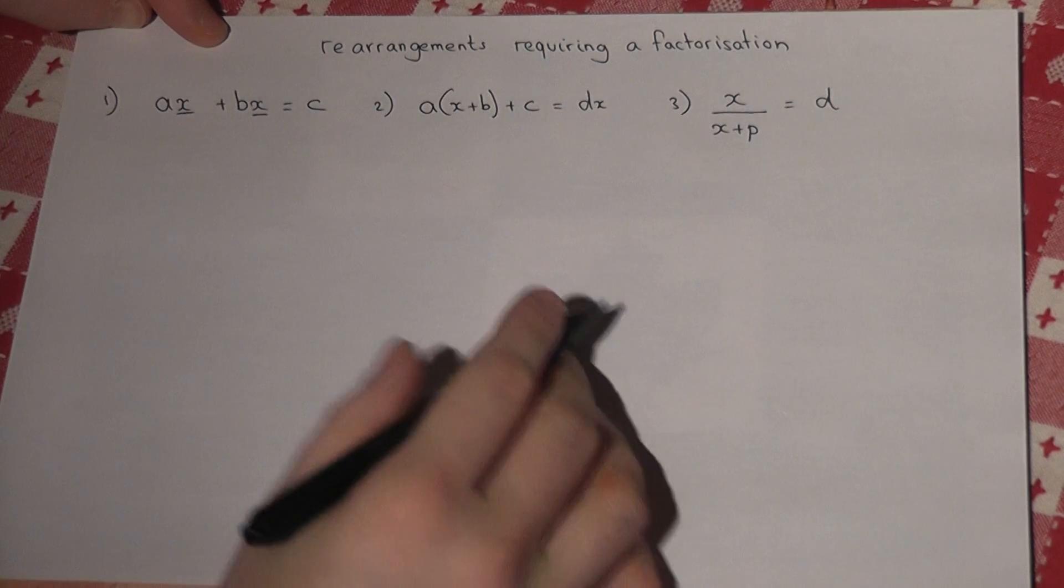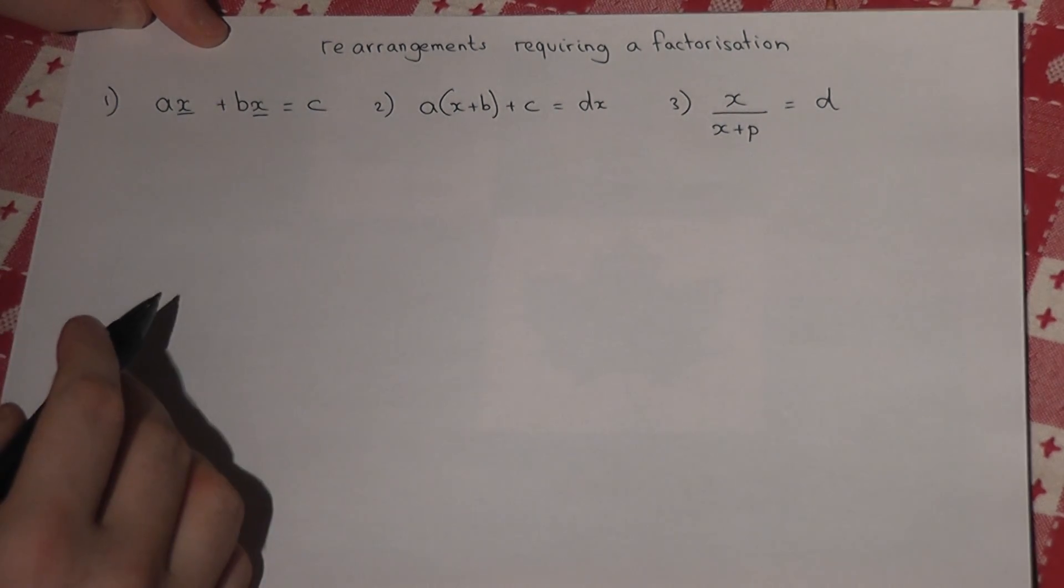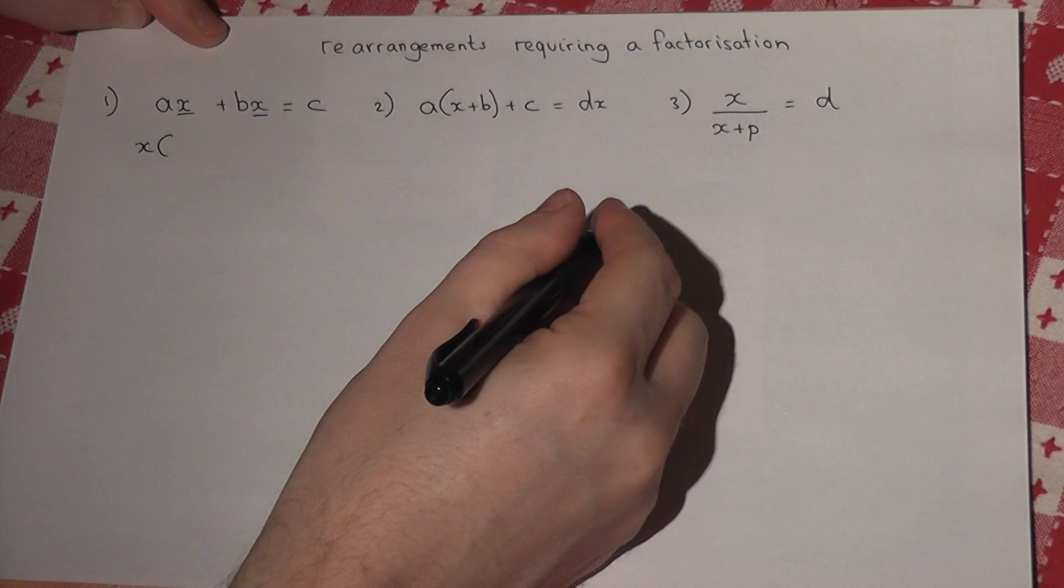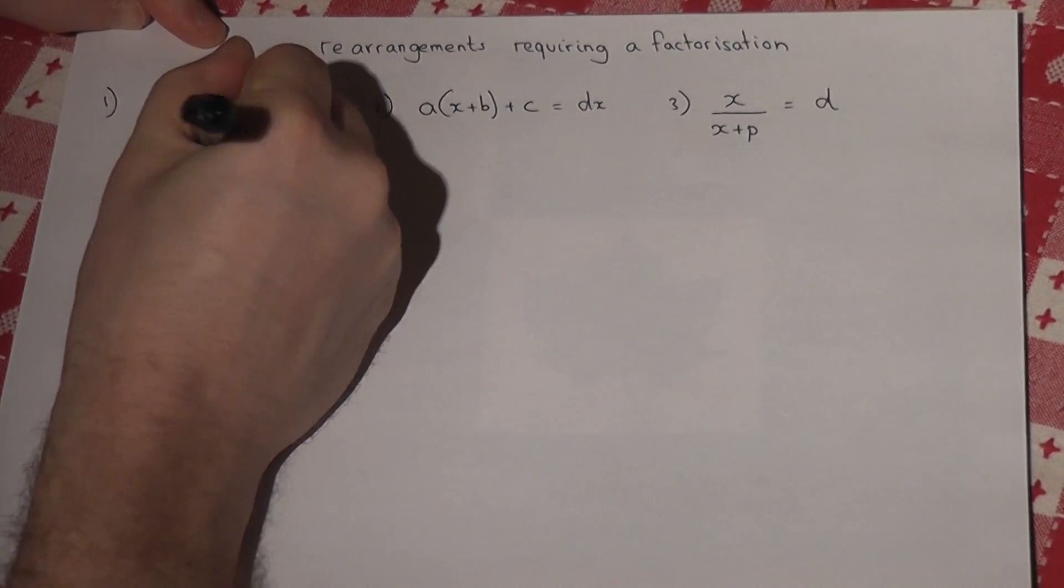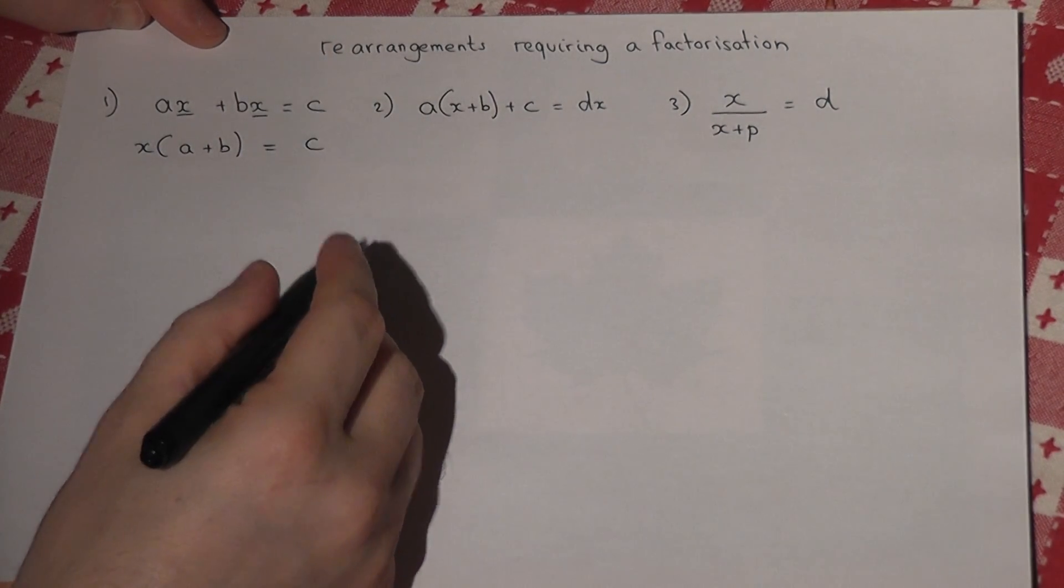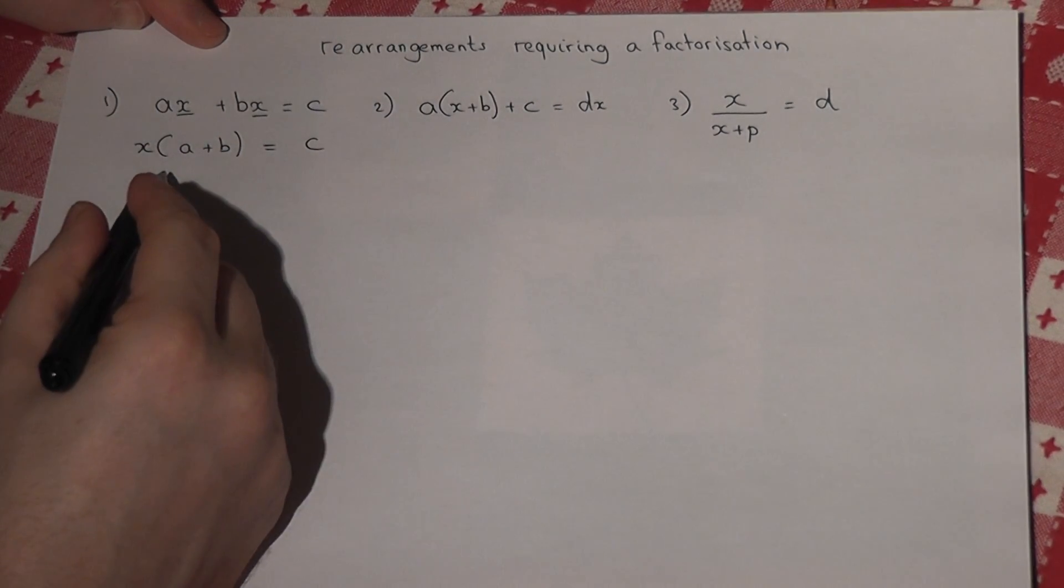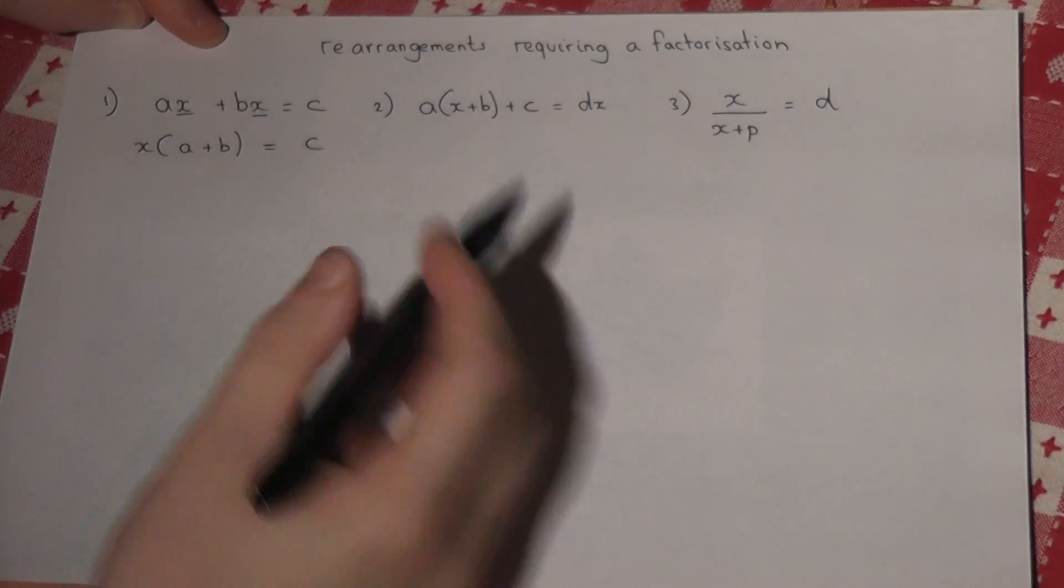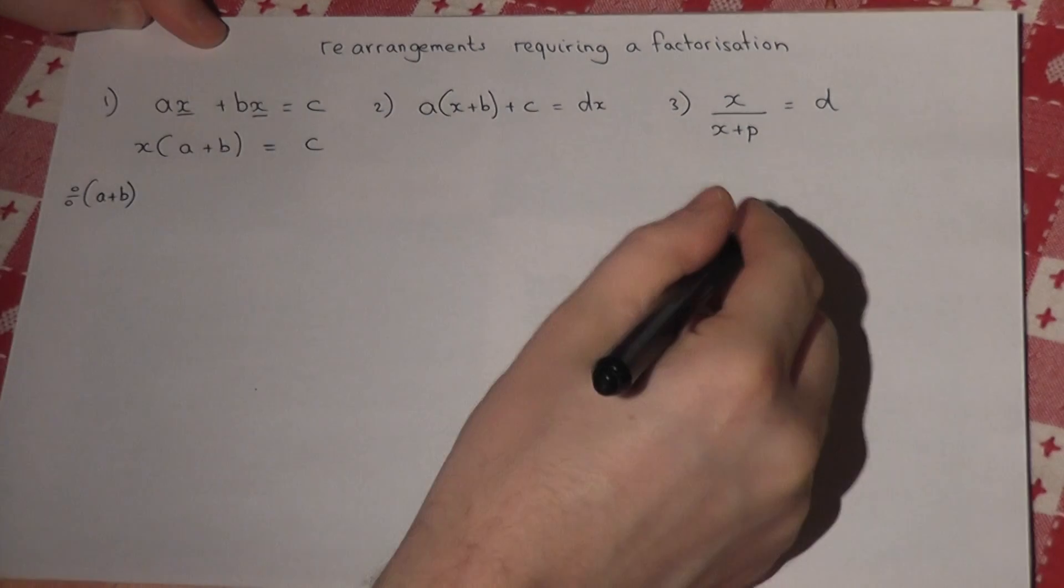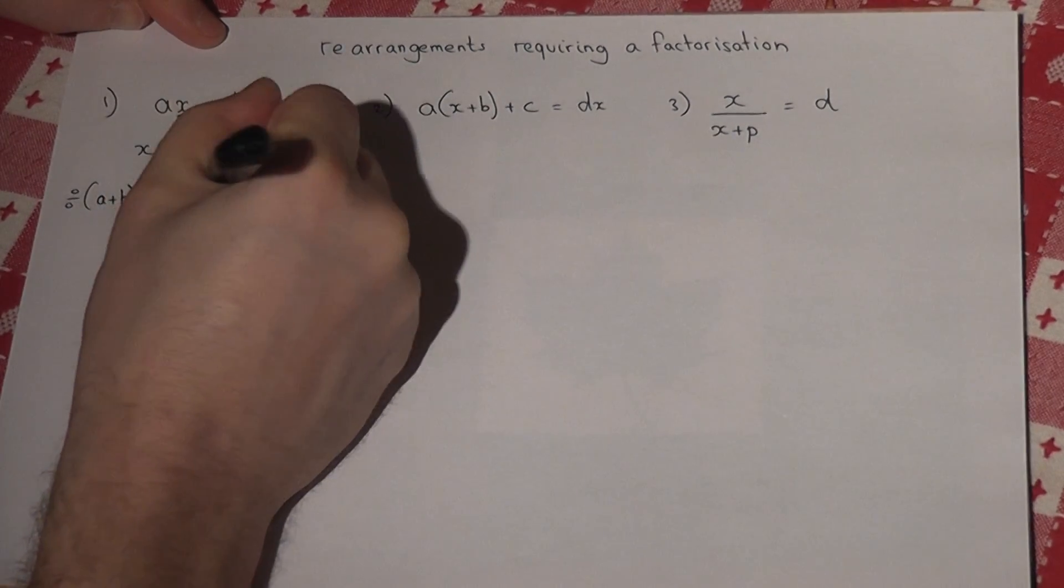In both the first two terms, so I can write it as x(a + b) = c. I've factorized and then divide by the coefficient a + b, so x equals c/(a + b).